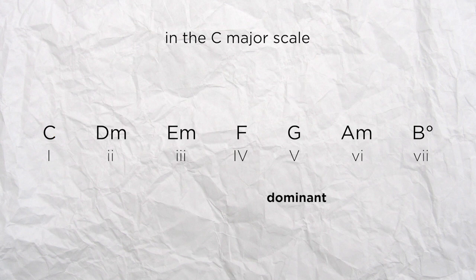In fact, each degree of the scale has a name of that type and that name can either describe the note itself or the chord in the scale. The first degree of the scale is the tonic, the fifth one is the dominant and the fourth one is the subdominant.